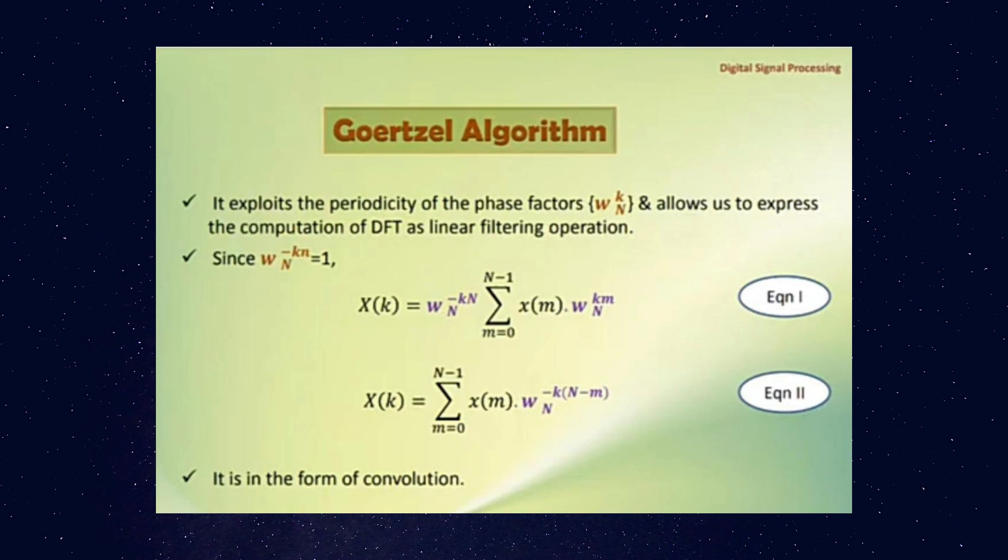We already know ωₙ⁻ᵏⁿ equals 1. So it doesn't affect if we take this factor inside the summation and we write Equation 2 as X(k) equals summation m equals 0 to n minus 1, x(m) ωₙ⁻ᵏ⁽ⁿ⁻ᵐ⁾. So this Equation 2 is in the form of convolution.